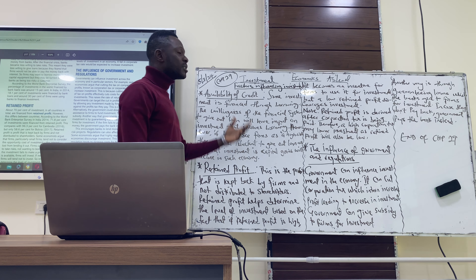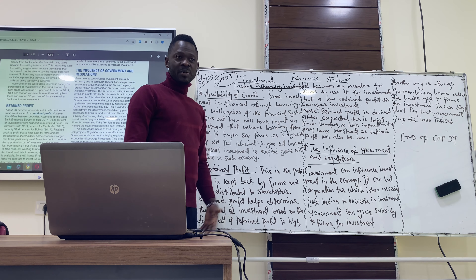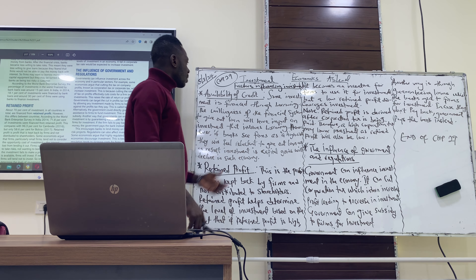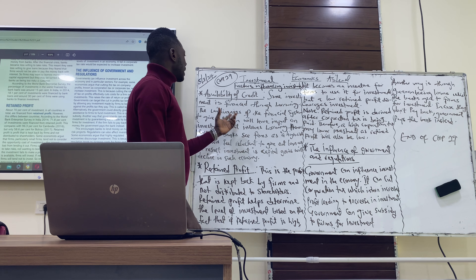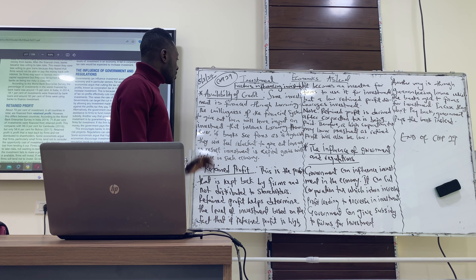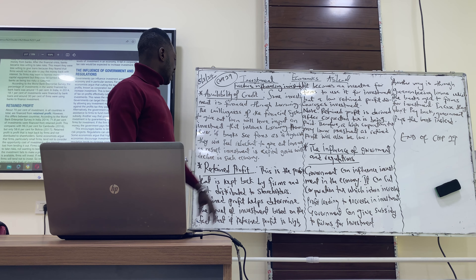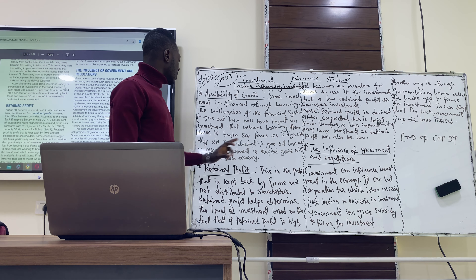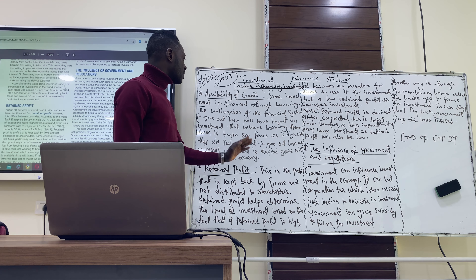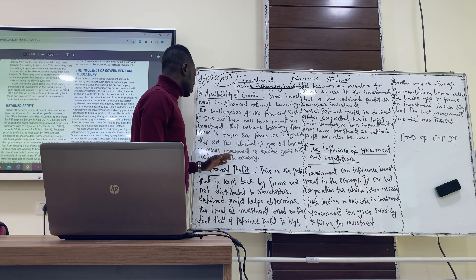We're going to start with availability of credit. When I talk about credit, it means being able to get a certain amount of money from the bank. Investment is financed through borrowing, so the willingness of the financial system to give out loans will have an impact on investment. If banks see firms as high risk, they will be reluctant to give out loans, and as a result investment in capital goods will decline in such an economy.